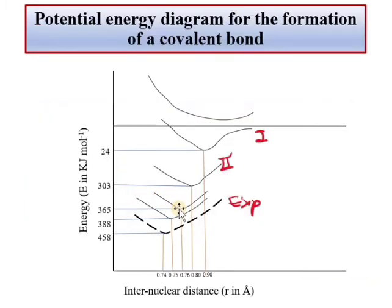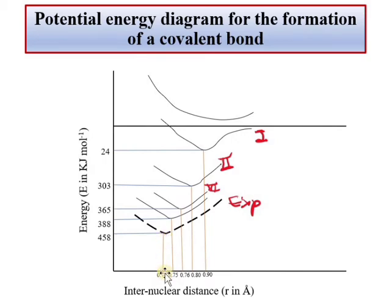जो nuclear charge feel करना चाहिए था, वो feel नहीं हो पा रहा — screening effect की वजह से। मतलब जब bond formation होता है, तो screening effect भी consider किया जाना चाहिए। Potential energy curve में इससे क्या change आए? तीसरी condition में energy 365 kJ/mol हो गई और bond distance 0.76 आ गई — जो 0.74 के नजदीक है, लेकिन 458 kJ/mol से अभी भी दूर है। तो इसका मतलब और भी कुछ होता है।